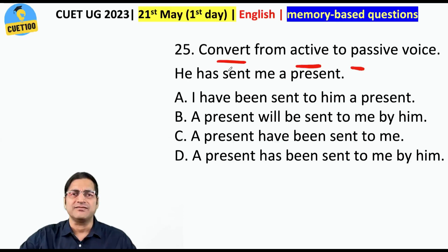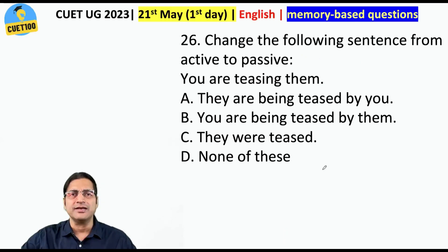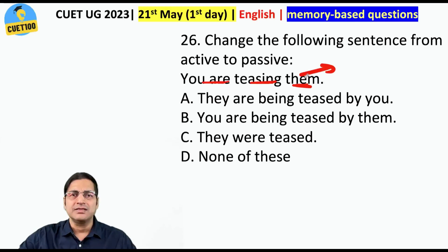Convert from active to passive. 'He has sent me a present' — a present has been sent to me by him. Isn't it very simple? Next: 'You are teasing them.' Now 'them' will become the subject — 'they.' They are being teased by you.